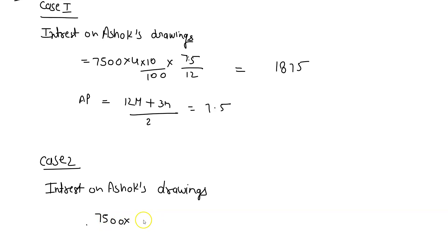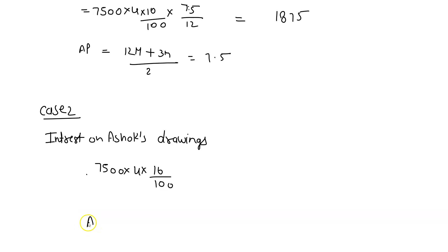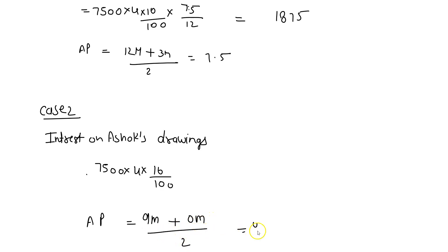Case 2 — End of each quarter. Drawings: 7,500 × 4 × 10/100, now we take out the average period. End of each quarter means the first withdrawal is at the end of June — 9 months to 31st March — and the last withdrawal is at the end of March — 0 months. Average period = (9 + 0) ÷ 2 = 4.5 months. So: 7,500 × 4 × 10/100 × 4.5/12 = ₹1,125.